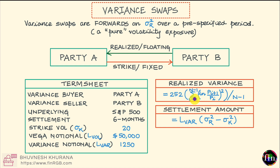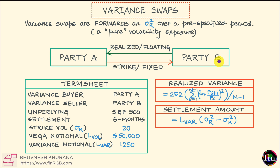This is how I'll calculate the realized variance once I reach the settlement date six months from today. The next entry in the term sheet is what we call strike vol. Strike variance is the fixed leg, and the square root of strike variance is the strike vol. Party B takes on the role of calculating the strike vol — this step is called pricing the variance swap.